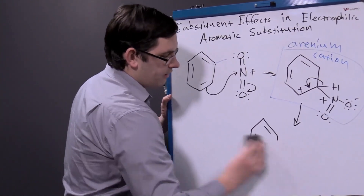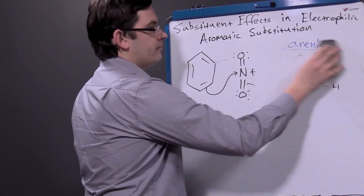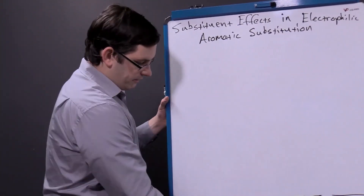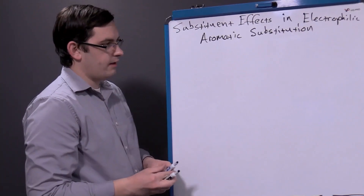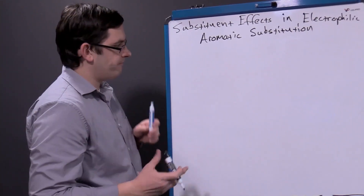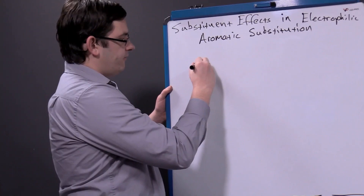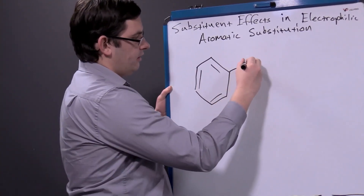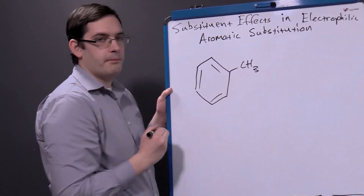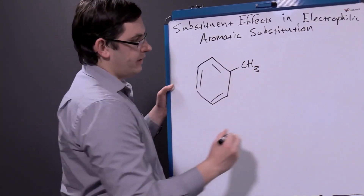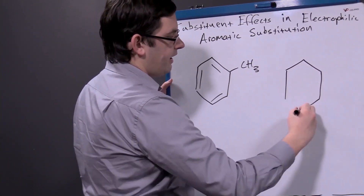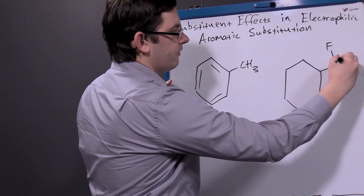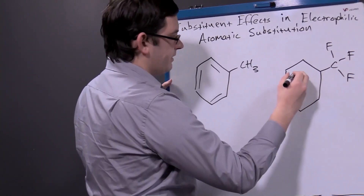As we look at the substituent effect — how new groups added onto our aromatic ring will affect our reaction — we need to consider how it will affect that initial rate-limiting step. So if we compare a couple of substituted aromatic rings: here we have a methyl group added on, which would create toluene, and here we have several fluorines in a trifluoro arrangement on a single carbon.